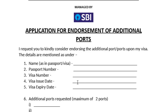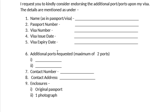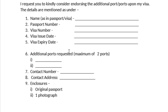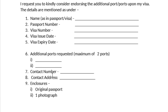This is the visa issue date. If you have a visa issue, then you have a visa. Then you have a visa expired date. You have an additional port, you have to add this port in English. You have to add port number 1, port number 2, and port. You have to add a contact number. Then you have a contact address. You have to add the present address. You have to add the original passport and background.